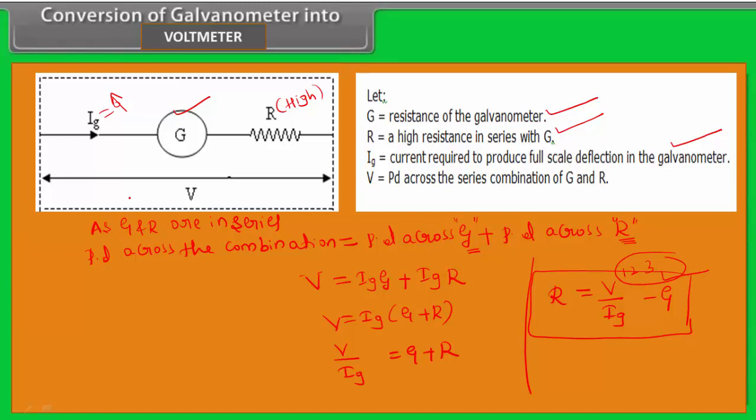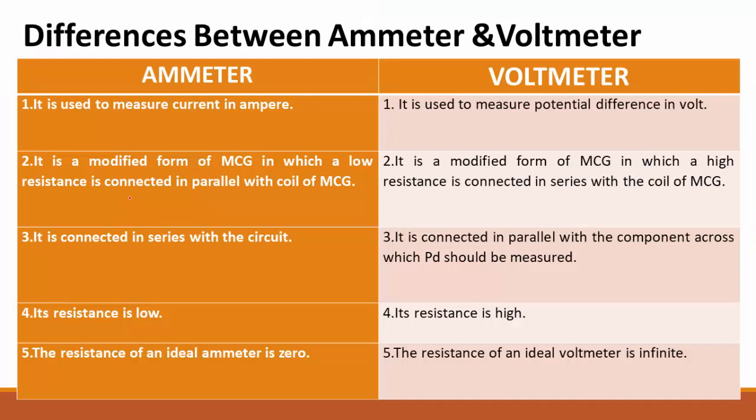Now we will see about what is the difference between galvanometer and voltmeter, or what is the difference between ammeter and voltmeter. Galvanometer is a very sensitive instrument used to measure the small amount of electric current in the order of microampere. Ammeter is the device which is used to measure the current. Voltmeter is the device which is used to measure the potential difference.